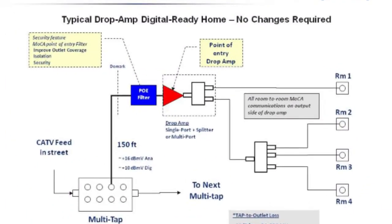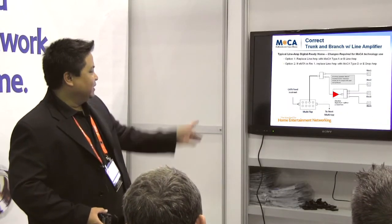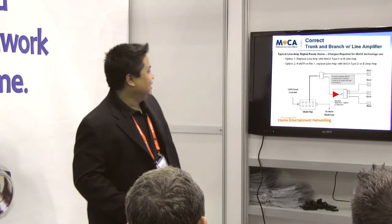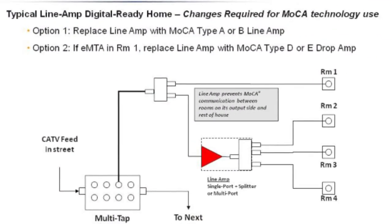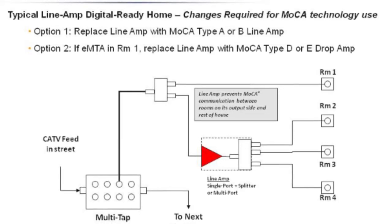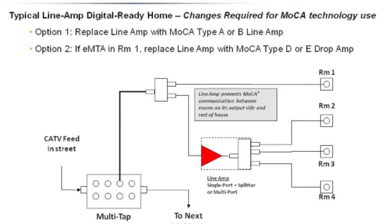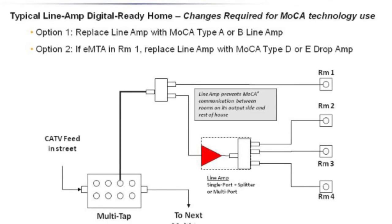Here's an example where you might have an amplifier in the network. In this case, the amplifier would not allow room one to connect to the other rooms in the home, so you may want to remove it or replace it with a MoCA-compatible amplifier. The MoCA-compatible amplifier lets the MoCA signal pass back through without affecting the amplification process or operation of the amplifier.